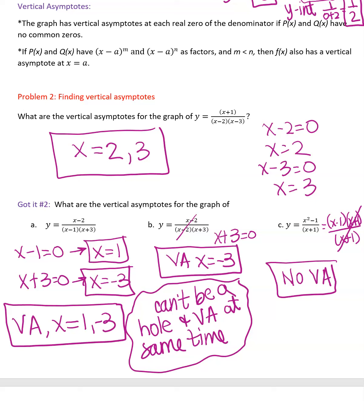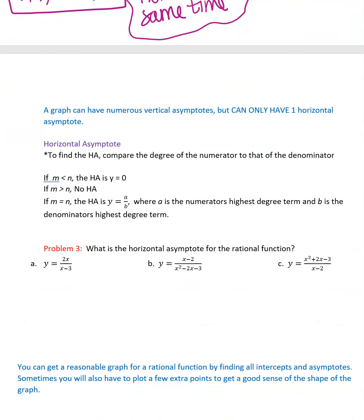A graph can have numerous vertical asymptotes but only one horizontal asymptote. To find horizontal asymptotes, compare the degree of the numerator to the degree of the denominator. If the numerator degree is less than the denominator, the horizontal asymptote is y = 0. If the numerator degree is greater, there is no horizontal asymptote. If they are equal, the asymptote is the ratio of the leading coefficients.